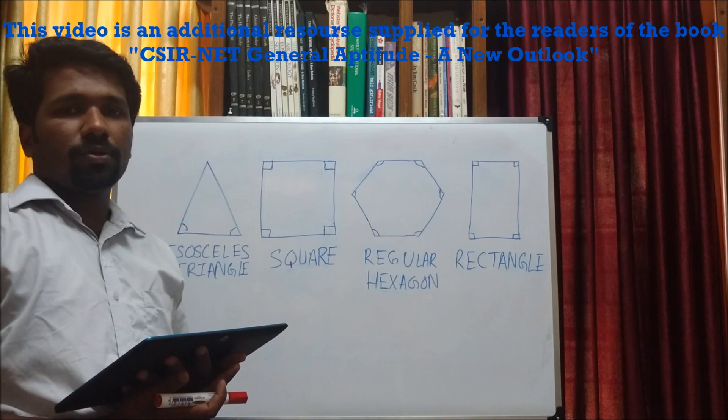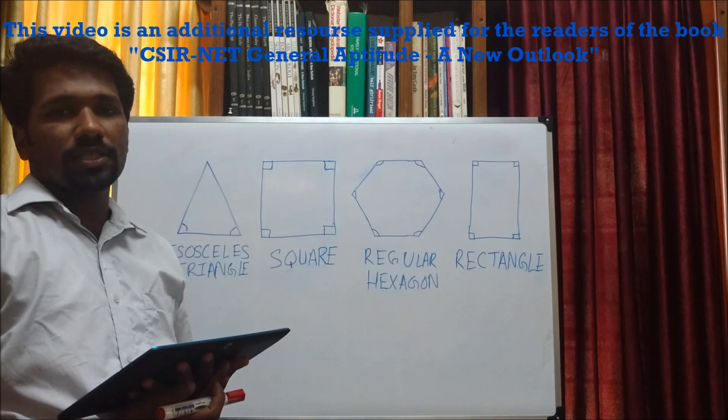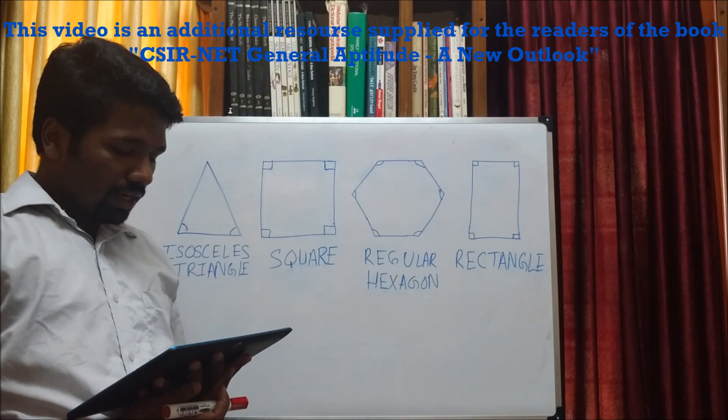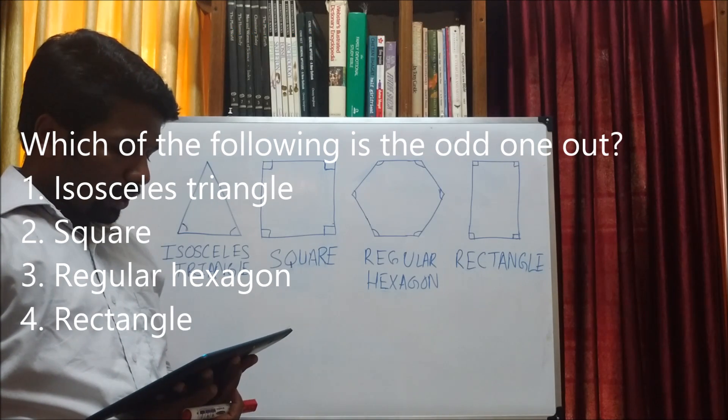Now we are going to discuss a question from June 2017 question paper of life sciences and physical sciences. The question reads like this: Which of the following is the odd one out?